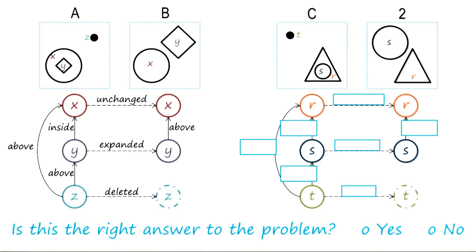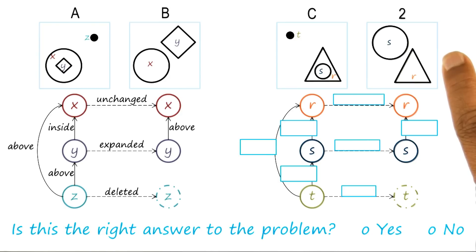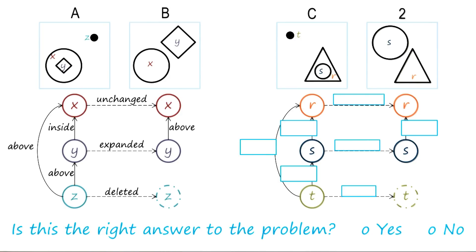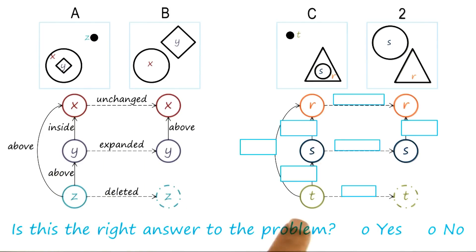Let us do another exercise together. This time I picked a different choice, choice two. So now we can build a representation for A is to B, like earlier.